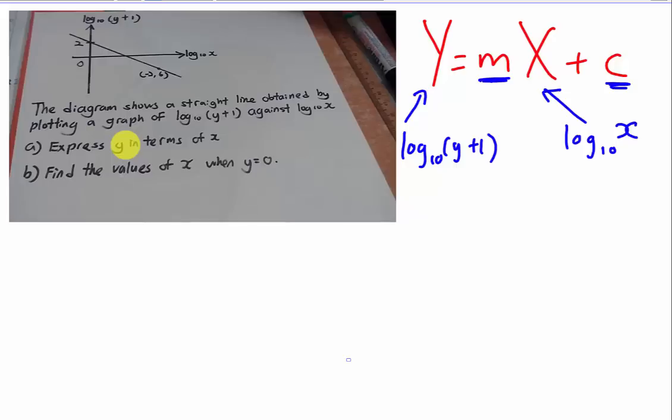Actually the y intercept is very direct in this case. You see on the diagram here, the line actually passing through the y axis, I mean the vertical axis because in this case it's not called y axis. The vertical axis at 2. So obviously my c is equal to 2.